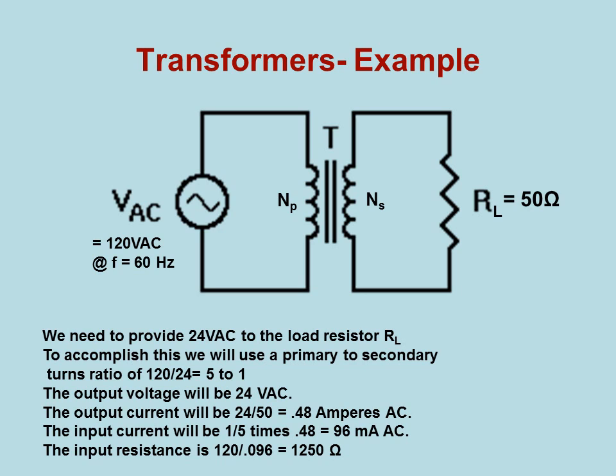The input resistance then involves the turns ratio squared. It's 120 divided by 0.096, which is equal to 1250 ohms. If you look back at those equations, you'll see that the ratio of input impedance to output impedance is proportional to N squared, so the higher input impedance would be reflected at the output.